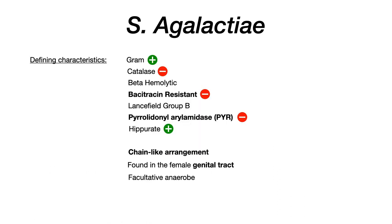Strep agalactiae is a gram positive, catalase negative, beta hemolytic strep. It's bacitracin resistant, which is very important because that differentiates it from strep pyogenes if the test writer doesn't give you any other information. You might see this shorthand written as group B strep, just like how in strep pyogenes you saw group A strep — this refers to the Lancefield grouping. So if you see GBS, which is short for group B strep, that's referring to strep agalactiae.